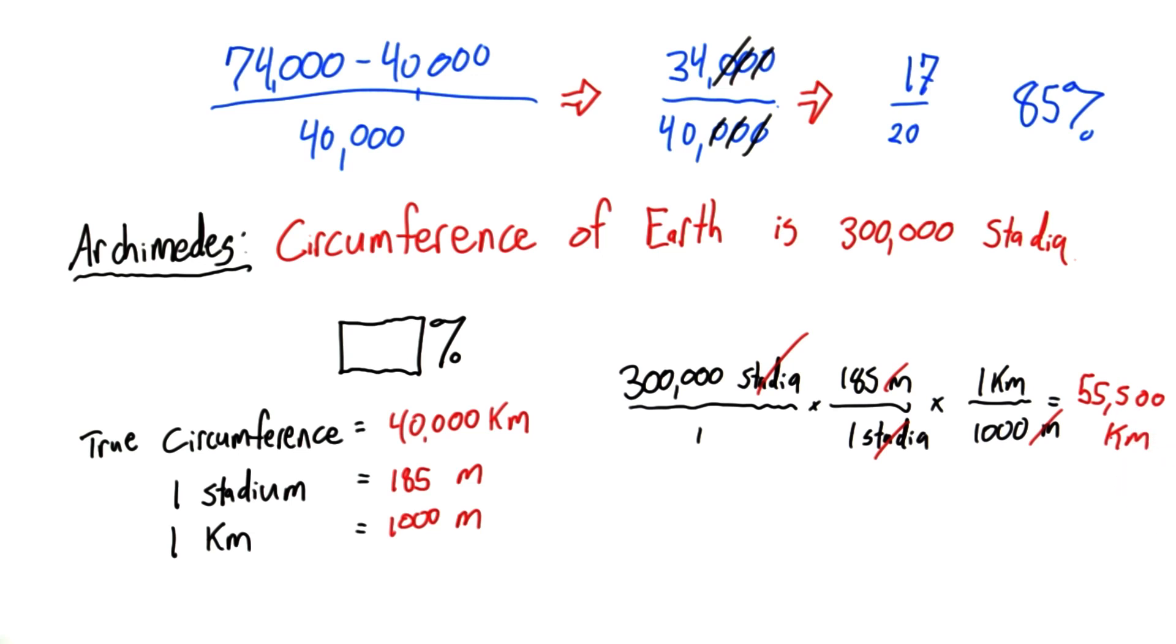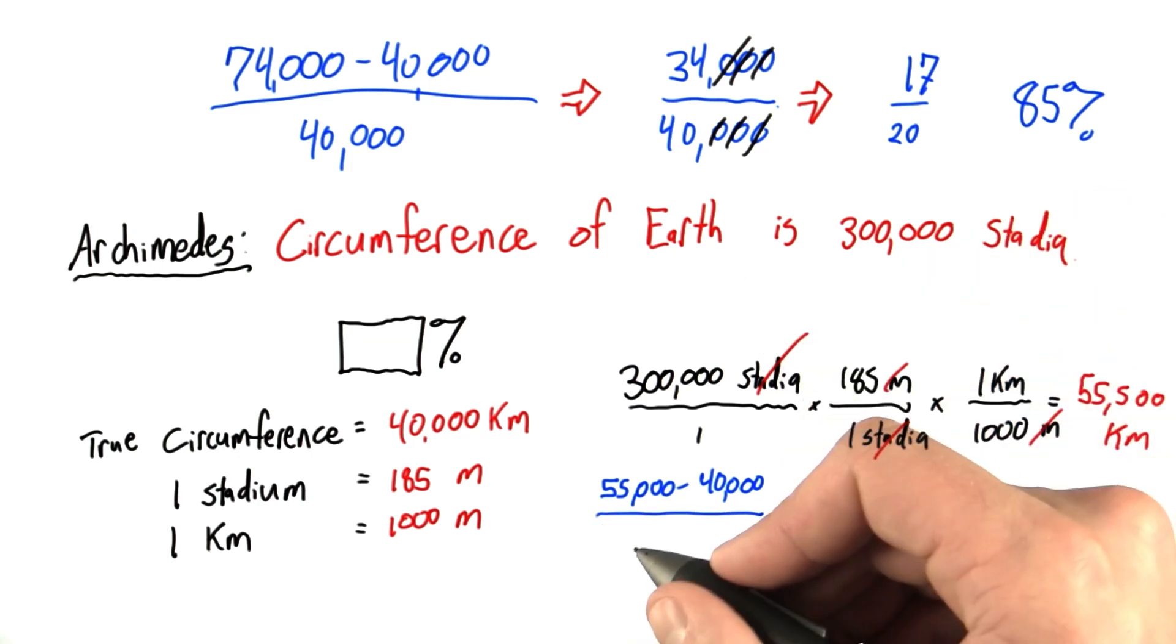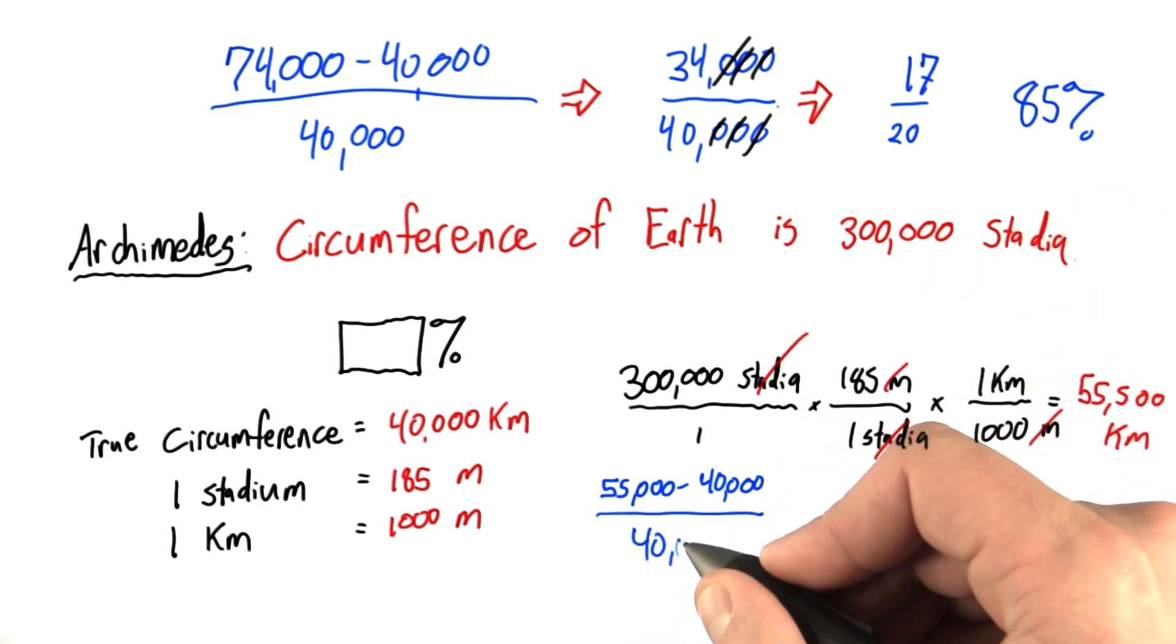Now we can calculate the error by looking at the absolute error, which is how far off Archimedes was, and that's 55,000 minus 40,000, and dividing that by the true circumference, which we know is 40,000 kilometers.